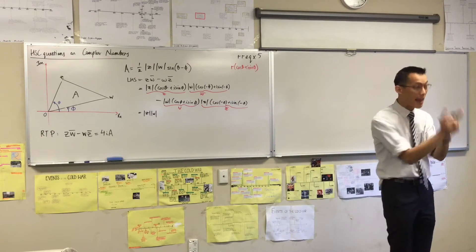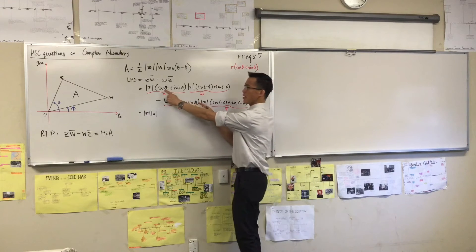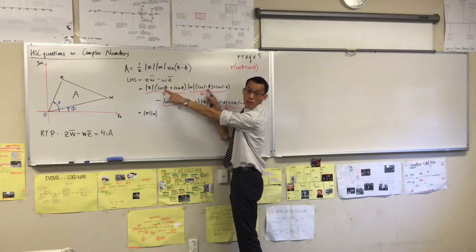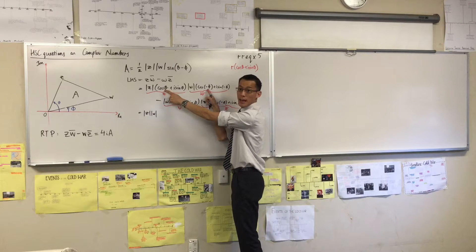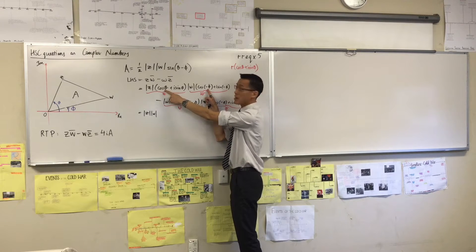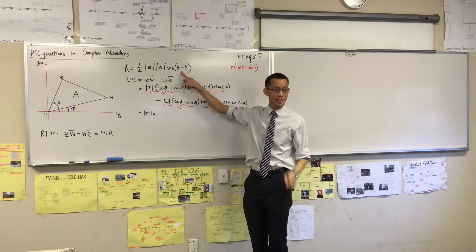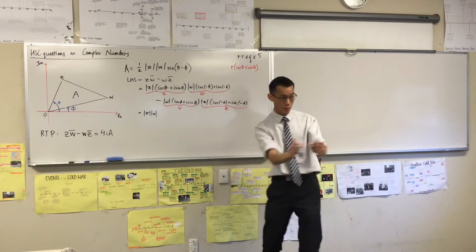What do I do to the arguments? I add them. So you can see, here's one argument and here's the other one. When I add these together, I'm going to get theta minus phi. That's a good sign. That's a good sign that we're headed in the right direction.